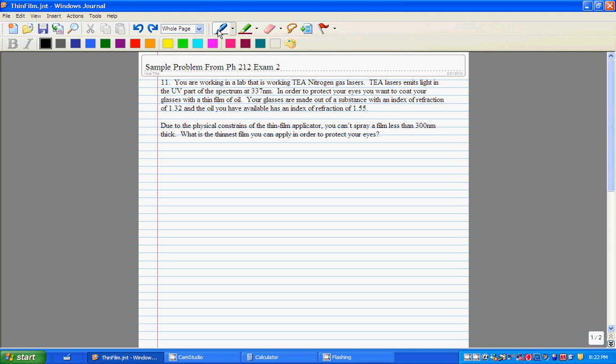In order to protect our eyes, we're going to coat our glasses with a thin film of oil. We know the indexes of refraction of both the oil and our glasses, and due to physical constraints of our thin film applicator, we can't spray a film less than 300 nanometers thick. The question is, what is the thinnest film we can apply of oil on our glasses to protect our eyes?